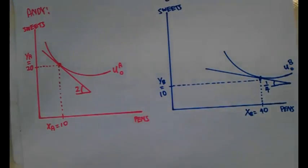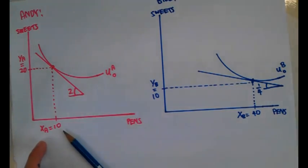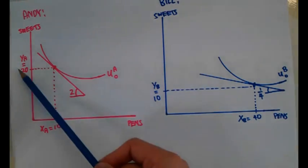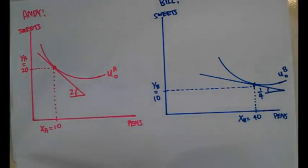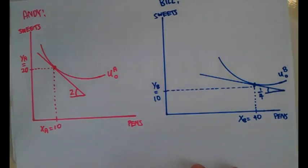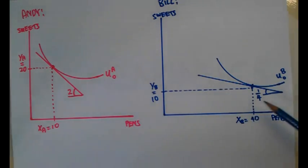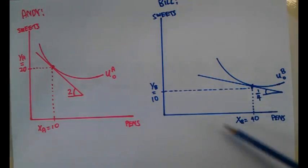Let me show you how this would look like on an individual graph. Take a look at Andy — Andy has got 20 sweets initially and 10 pans, so his opportunity cost of trading them away will be 2, so it will be 2Y per X. This is his indifference curve — he was here because this makes him happy. Now let's take a look at Bill — Bill initially had 10 sweets and 40 pans. This is his budget line, his so-called price line, because to trade away or to produce this he would have to give out one sweet for 4 pans, so that's why it's 1 over 4 over here. This is his indifference curve.